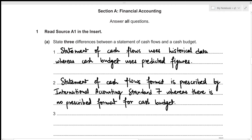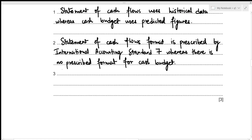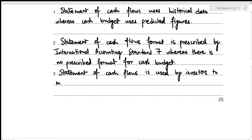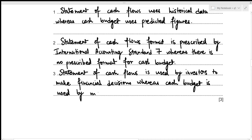The third difference is that the statement of cash flows is used by investors to make financial decisions, whereas a cash budget is used by management to make management decisions. Statement of cash flows is used by investors to make financial decisions, whereas cash budget is used by management to make management decisions.